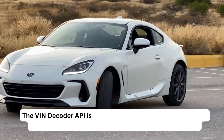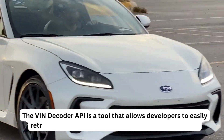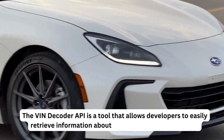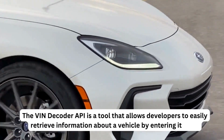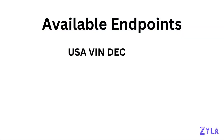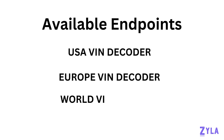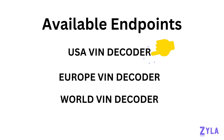The VIN Decoder API is a tool that allows developers to easily retrieve information about a vehicle by entering its VIN. Endpoints include USA VIN Decoder, Europe VIN Decoder, and World VIN Decoder. For example, let's test the Endpoint USA VIN Decoder.